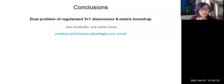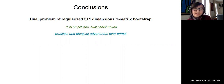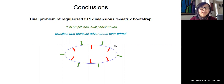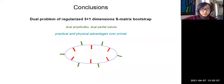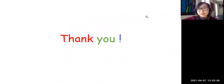In conclusion, we have formulated the dual problem for a regularized three plus one dimensional S-matrix bootstrap. In doing so we introduced the concepts of dual amplitude and dual partial waves. The dual problem has practical and physical advantages over the primal problem. By combining primal and dual together, we can bracket the boundary of the space of S-matrices, providing a useful tool to further explore the space of S-matrices in three plus one dimensions.